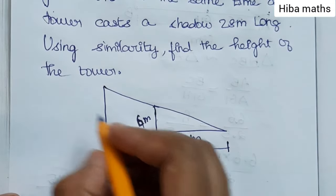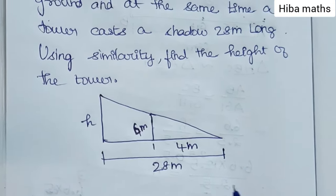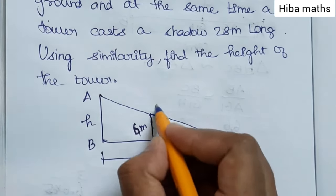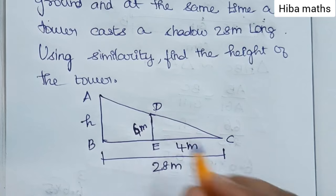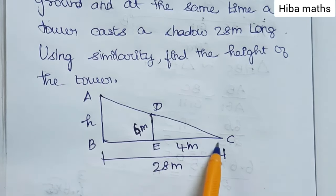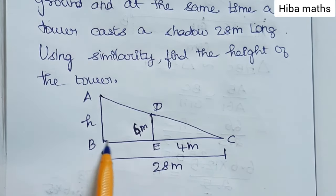The stick has a height. This is A, this is B, this is C, this is D, and this is E. So the diagram is like this. The stick casts a shadow and the tower casts a shadow. Now, the two are similar.